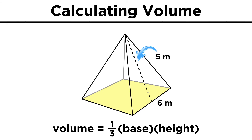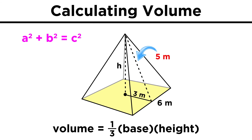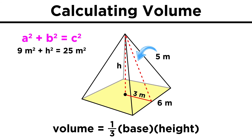What if we don't know the height of the pyramid, but only the height of the triangles? Luckily, we know the Pythagorean theorem, so we could imagine a triangle where one leg is the height of the pyramid, the other leg is half the length of the base, and the hypotenuse is the height of a triangular face. We plug them into the equation and we can then solve for the height. So it's just one extra step.